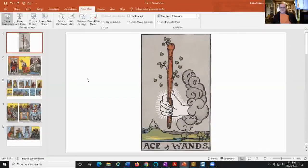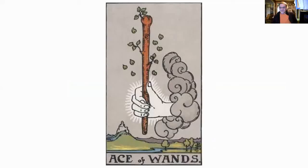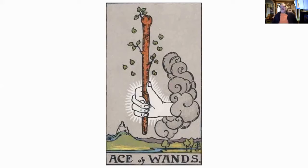The first is the Ace of Wands. The Ace of Wands is pure elemental fire — it's the one thing, the transcendental unity, as it expresses through fire. It is the world of fire. So it's a really good one to start your meditating on.